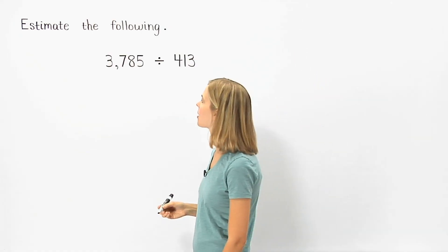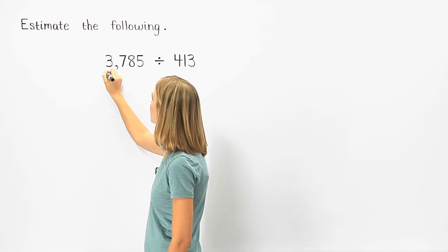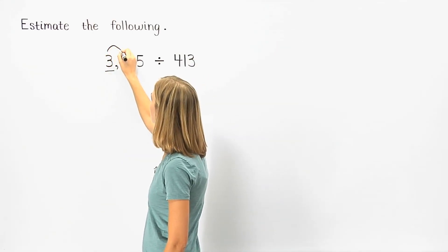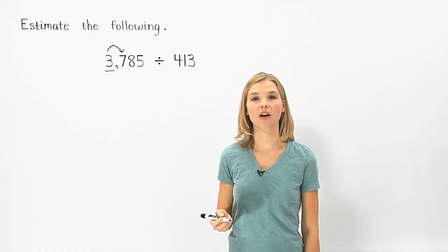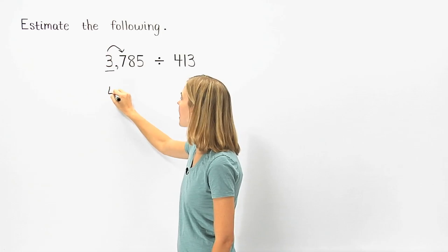Rounding 3,785 to the nearest thousand, the seven to the right of the rounding place tells us to round up. So 3,785 rounds up to 4,000.